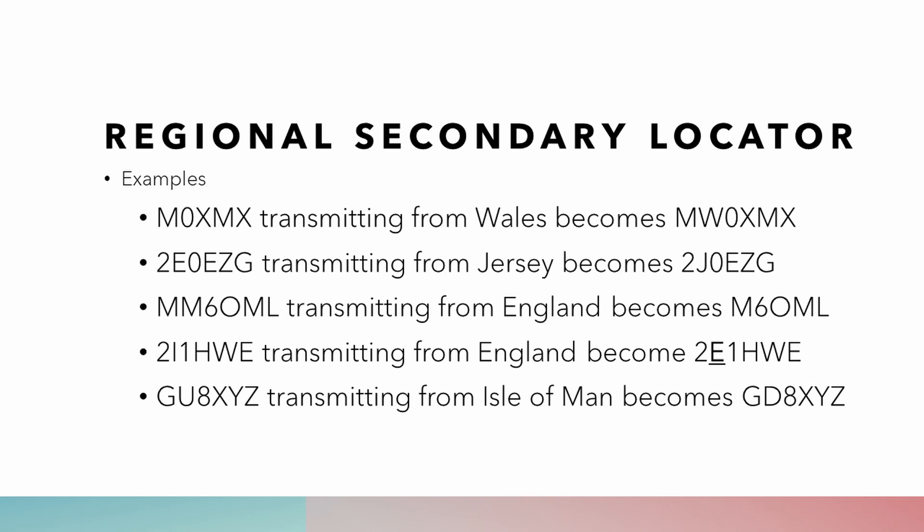Here are some examples of when the regional secondary locator is used. M-0-X-X-X transmitting from Wales becomes M-W-0-X-X-X. 2-E-0-E-Z-G transmitting from Jersey becomes 2-J-0-E-Z-G. M-M-6-O-M-L transmitting from England becomes M-M-6-O-M-L. 2-I-1-H-W-E transmitting from England becomes 2-E-1-H-W-E. And G-U-8-X-Y-Z transmitting from the Isle of Man becomes G-D-8-X-Y-Z.